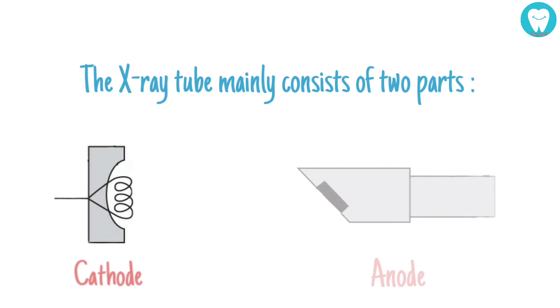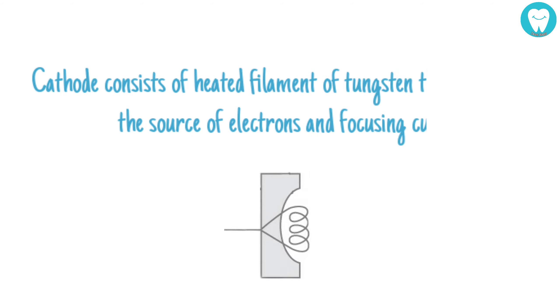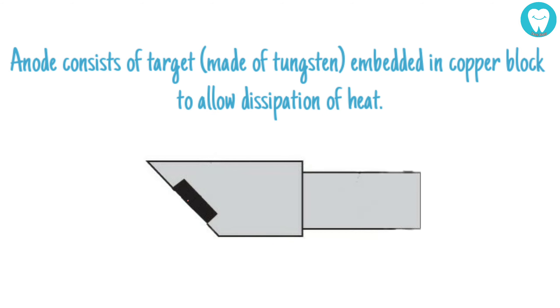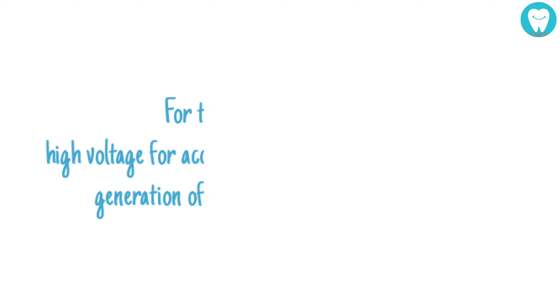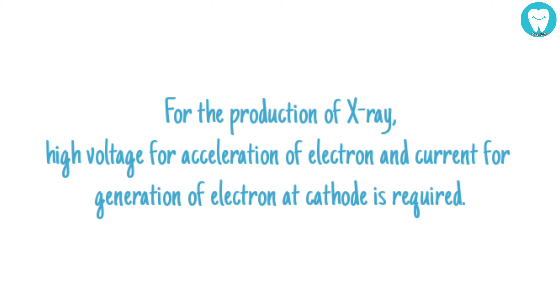The X-ray tube mainly consists of two parts: cathode and anode. The cathode consists of a heated tungsten filament that provides the source of electrons and a focusing cup. The anode consists of a tungsten target embedded in a copper block to allow dissipation of heat. For the production of X-rays, high voltage for acceleration of electrons and current for generation of electrons at the cathode is required.